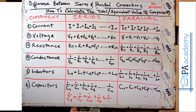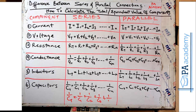That covers the key differences between series and parallel connections. We've discussed the definitions of series and parallel connections, looked at the diagrams so you can identify each type, and gone through how to calculate the total equivalent values for current, voltage, resistance, conductance, inductors, and capacitors. One important thing to note is that some circuits contain both series and parallel connections — we'll cover that in another video. If you have any questions or comments, leave them below, click like if you found this helpful, and I'll see you in another video. Thank you.